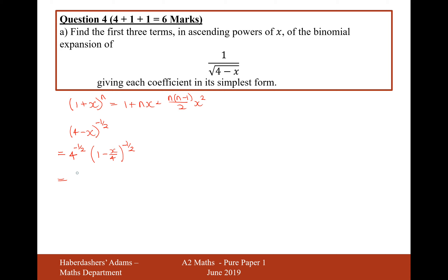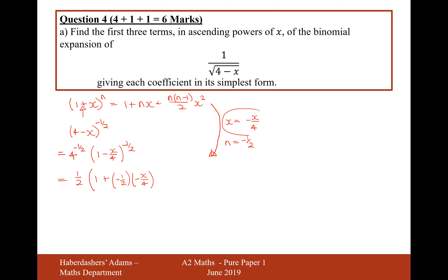Now, 4 to the power of minus a half equals a half. I'm going to binomially expand the remaining bracket. In the binomial formula, x is now replaced by minus x/4, and n is minus a half. So the expansion starts: 1, then plus n, which is minus a half, multiplied by x — which here is minus x/4. Note: because there's a plus in the formula but a minus in our bracket, the minus attaches to the x term, giving minus x/4.